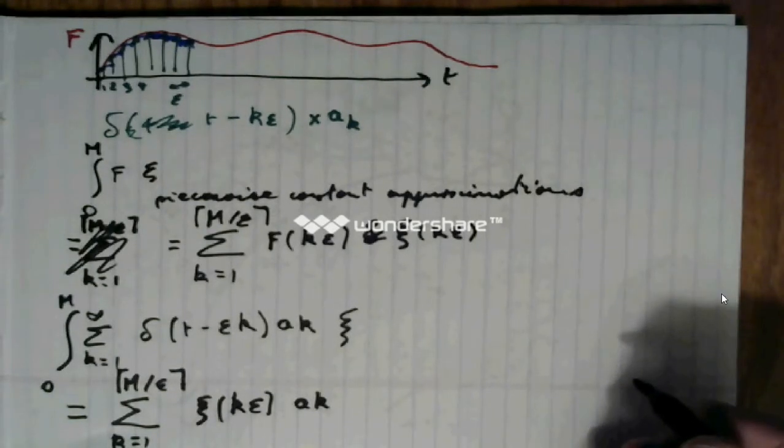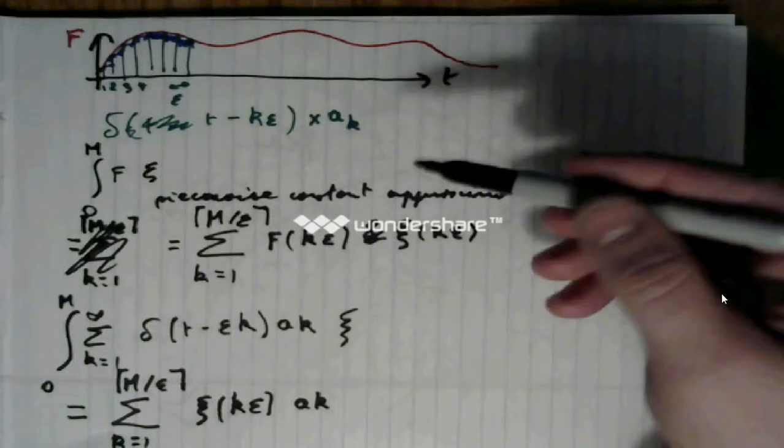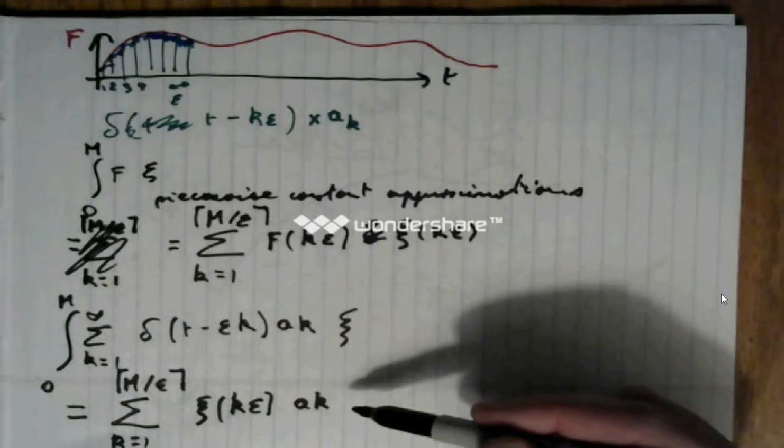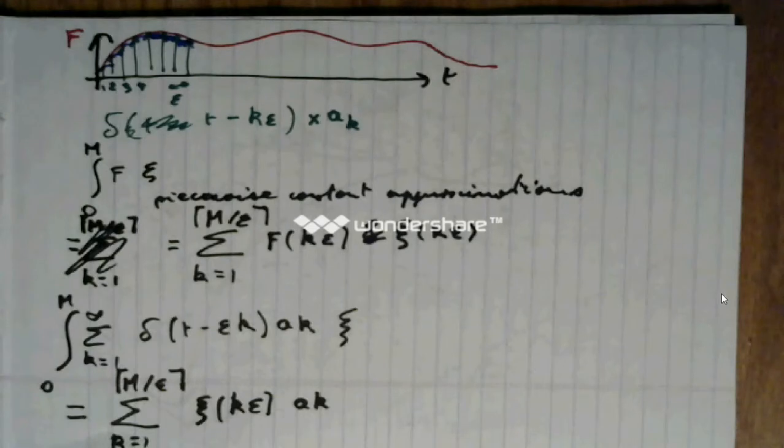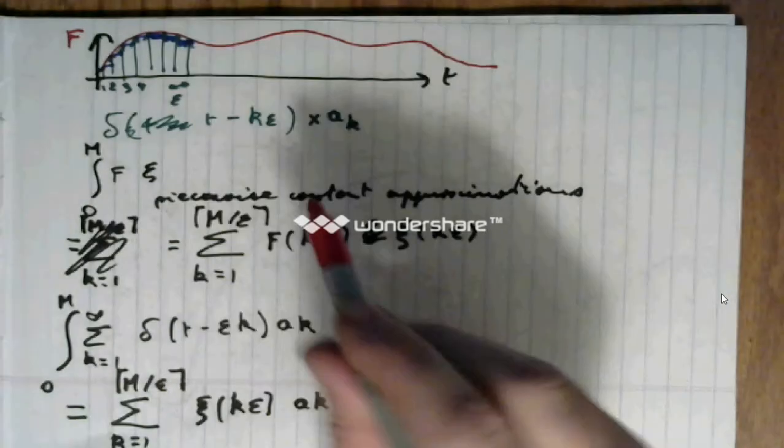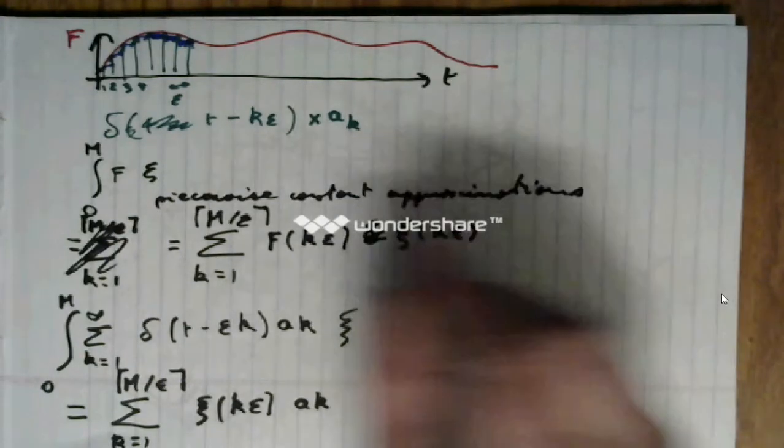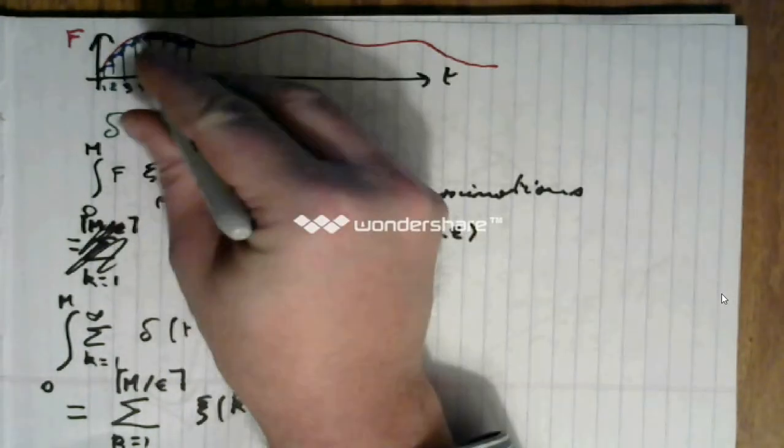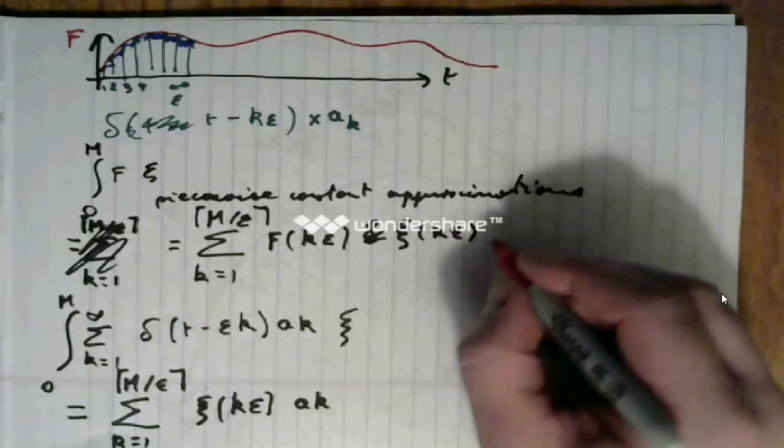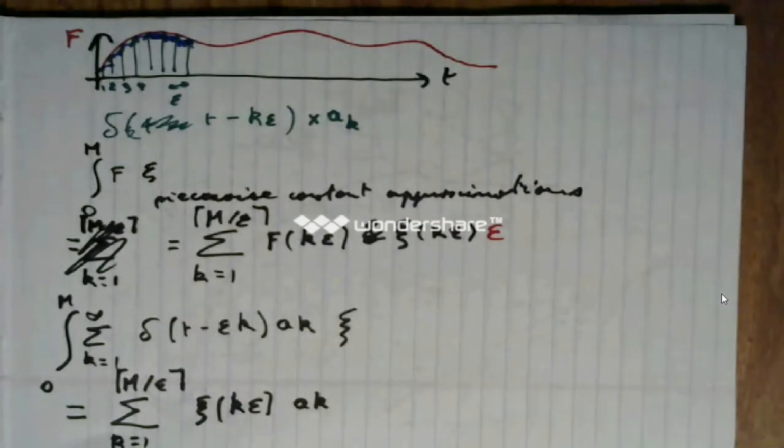So, I need to compare this expression with that expression. Before I do this, I must correct something. When we do the piecewise constant approximation, we need to, of course, take the width of the approximating rectangle. And therefore, we need to multiply this by epsilon.